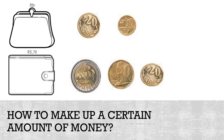How can you make up 5 rand 70 cents using valid money? The easiest way is to use a 5 rand, a 50 cent and a 20 cent — that gives us 5 rand 70. Or we can use a 2 rand plus a 2 rand plus a 1 rand to make up 5 rand, then a 20 cent plus a 20 cent plus a 20 cent plus a 10 cent to make up 70 cents. Just remember to use only valid money.